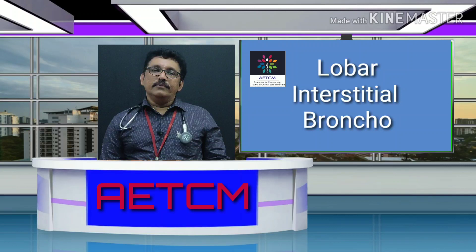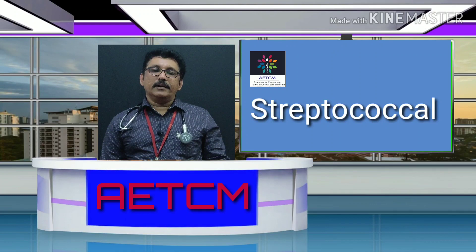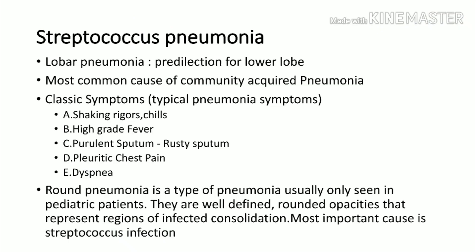Streptococcus pneumoniae is the most common type of community acquired pneumonia. It mainly affects one lobe of the lung — classically the middle or lower lobe, though upper lobe involvement can occur. If you see upper lobe involvement, suspect Klebsiella. Classical findings for typical pneumonia: high-degree fever, chills, cough with expectoration, rusty sputum, pleuritic chest pain, and dyspnea.